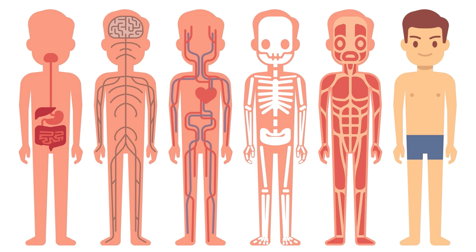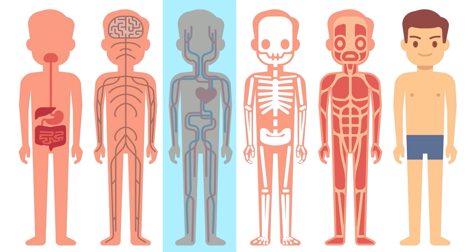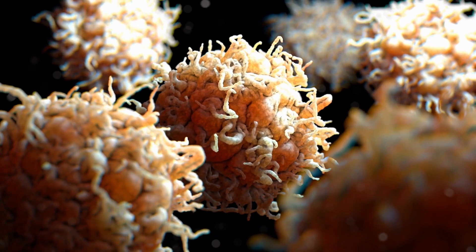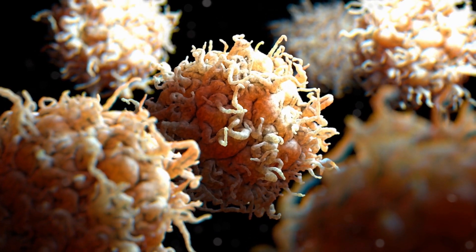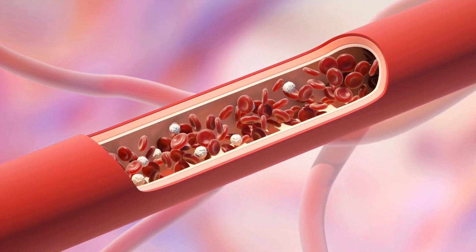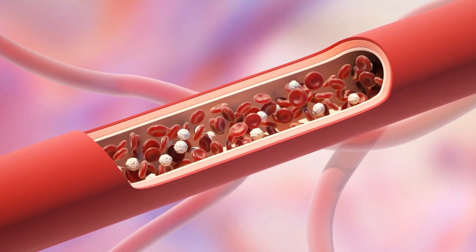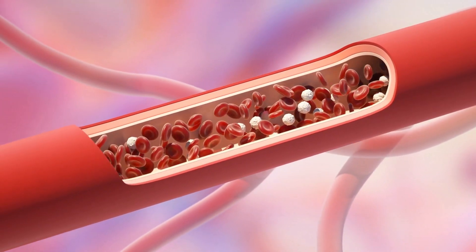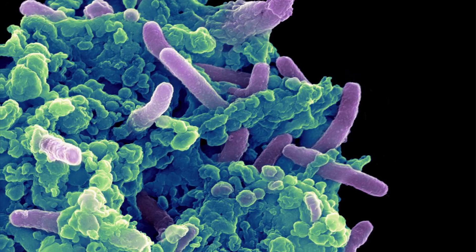Now unlike other systems in your body, such as the digestive system or the circulatory system, which are made up of distinct organs that are fixed in place, the immune system is made up of billions of individual white blood cells that are mobile throughout your body. These circulate through your bloodstream and move around in your tissues, patrolling for signs of infection or tissue damage. When they do detect a threat, they communicate with other immune cells so as to quickly mobilize a counterattack.